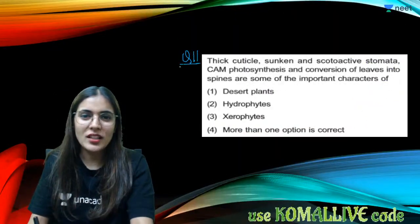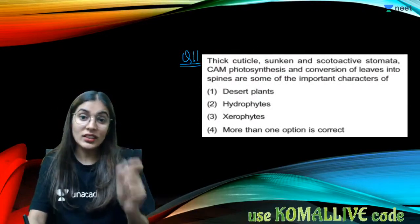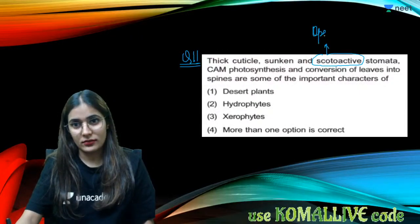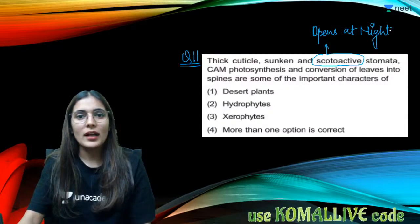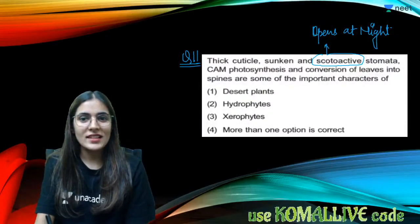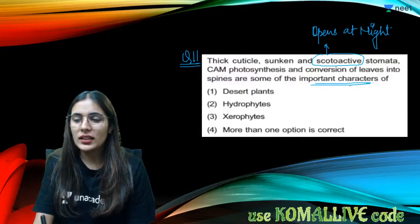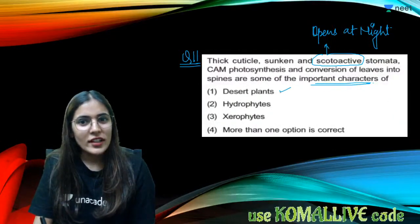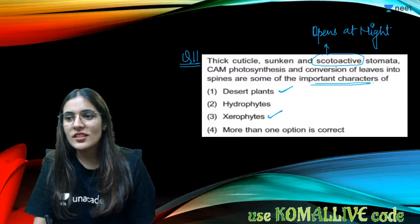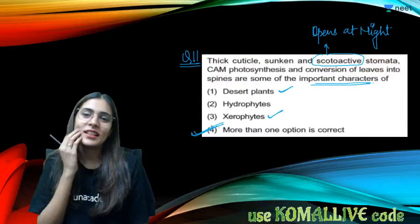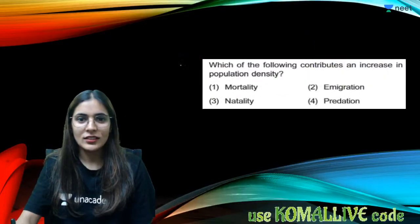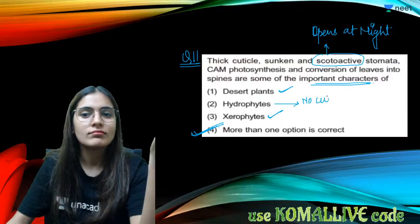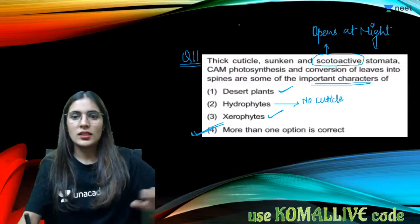Question eleven: plant-related adaptations — thick cuticle, sunken stomata, and scotoactive stomata (which open at night — CAM photosynthesis) — these are characteristics of desert plants, also called xerophytes. For hydrophytes, the opposite is true: no cuticle and no stomata if submerged, since they are fully underwater.